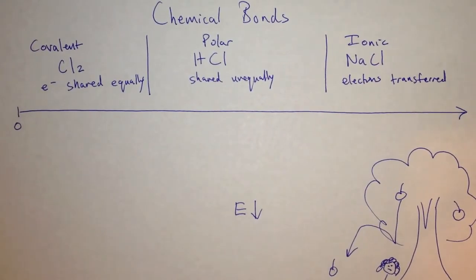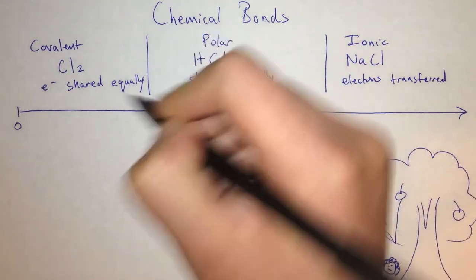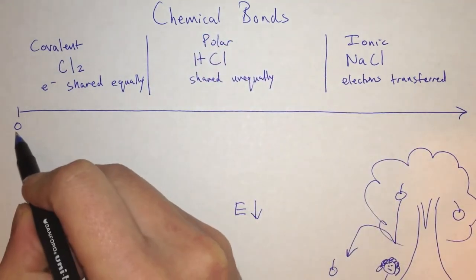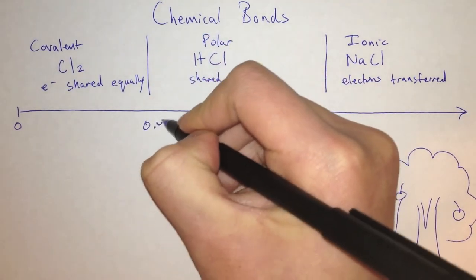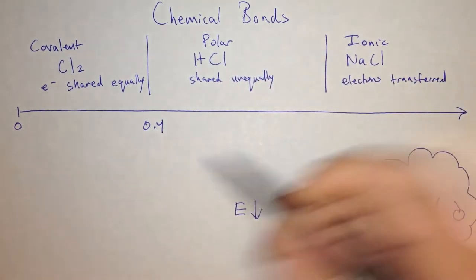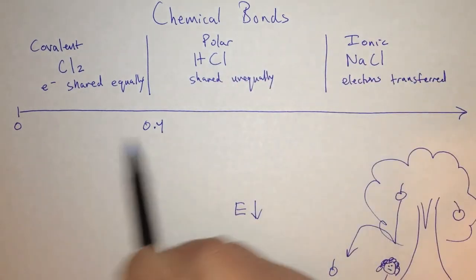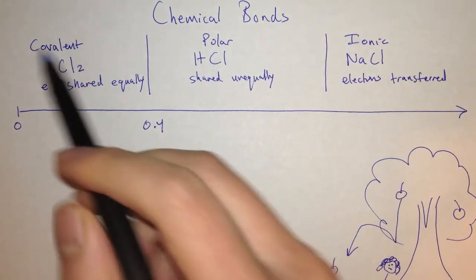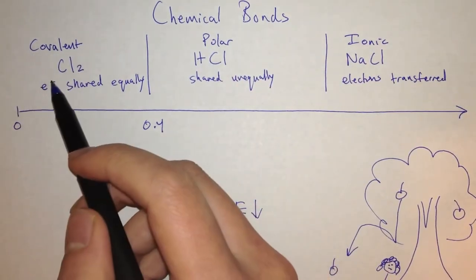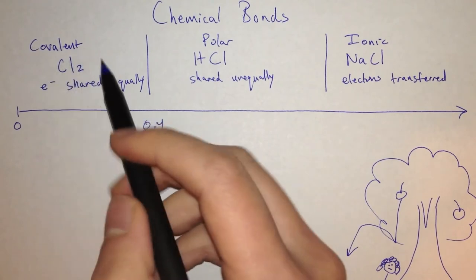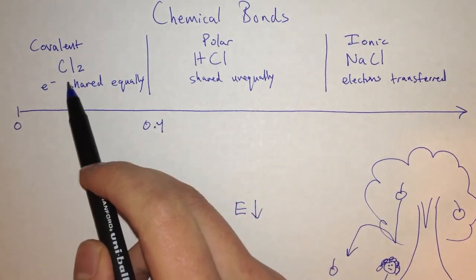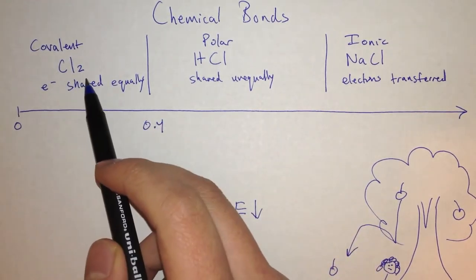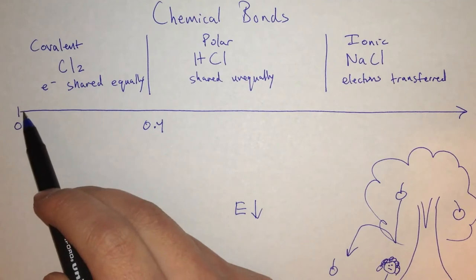In our class, we define a covalent bond as anything from a difference of 0 to 0.4 on the Pauling scale between the two atoms. In our case, chlorine's electronegativity is 3.16, and it's bonded to itself, so the difference is 0.